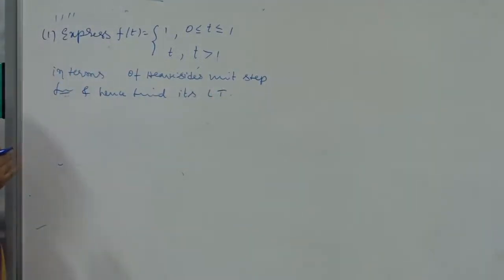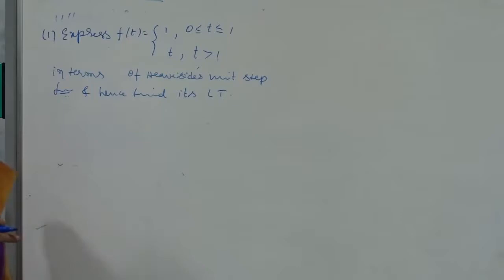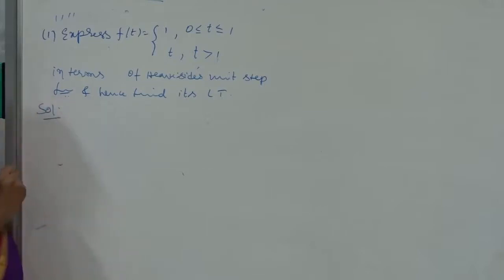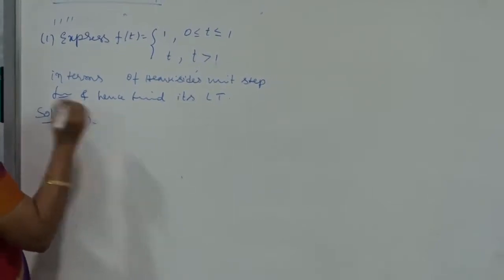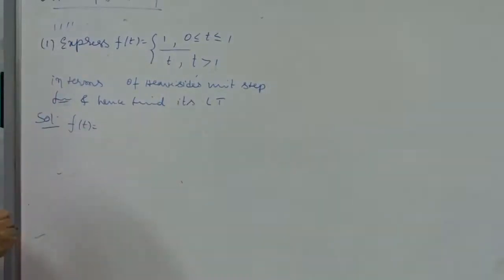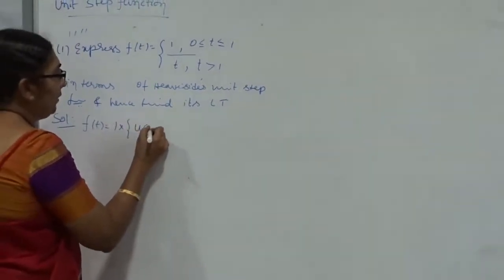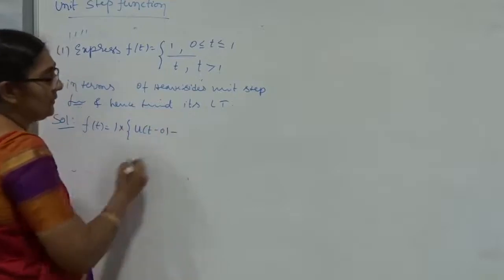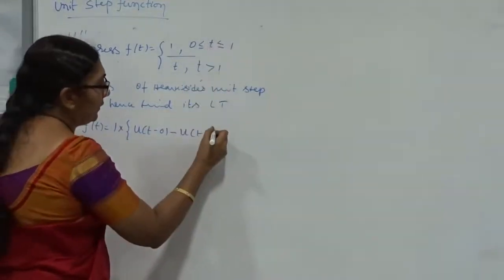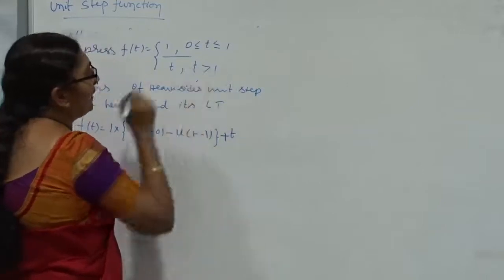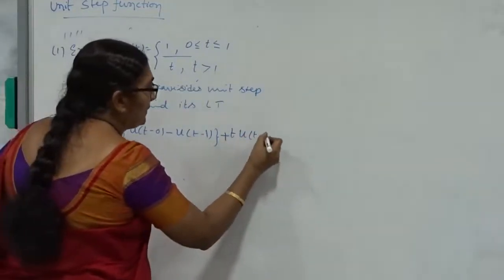First, we express F of T in terms of the unit step function. The first function is 1, defined over the range 0 to 1. Therefore, we write: 1 into [U of T minus 0 minus U of T minus 1]. The second function is T, but only for T greater than 1. Therefore, we add T into U of T minus 1.